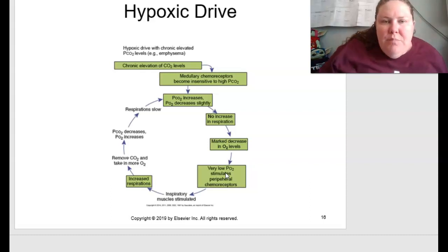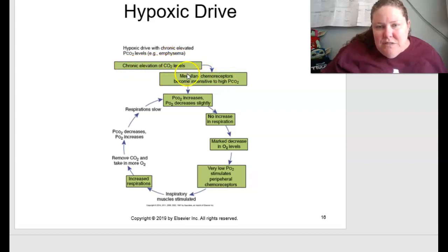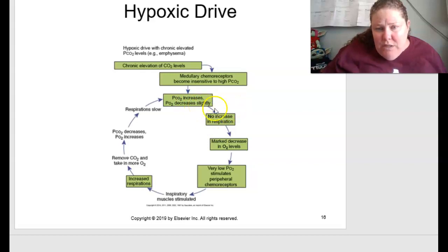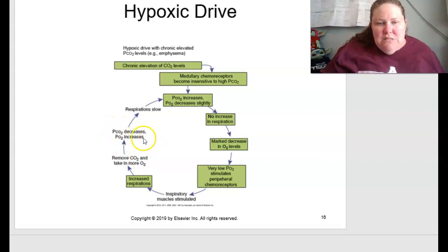Figure 13.4 on page 278 shows the hypoxic drive cycle with chronic elevated PCO₂ levels, as in emphysema. Chronic CO₂ elevation causes chemoreceptors in the medulla to become insensitive to high PCO₂. As PCO₂ increases, PO₂ decreases. With no increase in respiration, you can have a marked decrease in oxygen levels, stimulating peripheral chemoreceptors, causing inspiratory muscles to fire and increase respirations. This removes CO₂ and takes in more O₂, then the cycle repeats — a problematic pattern.